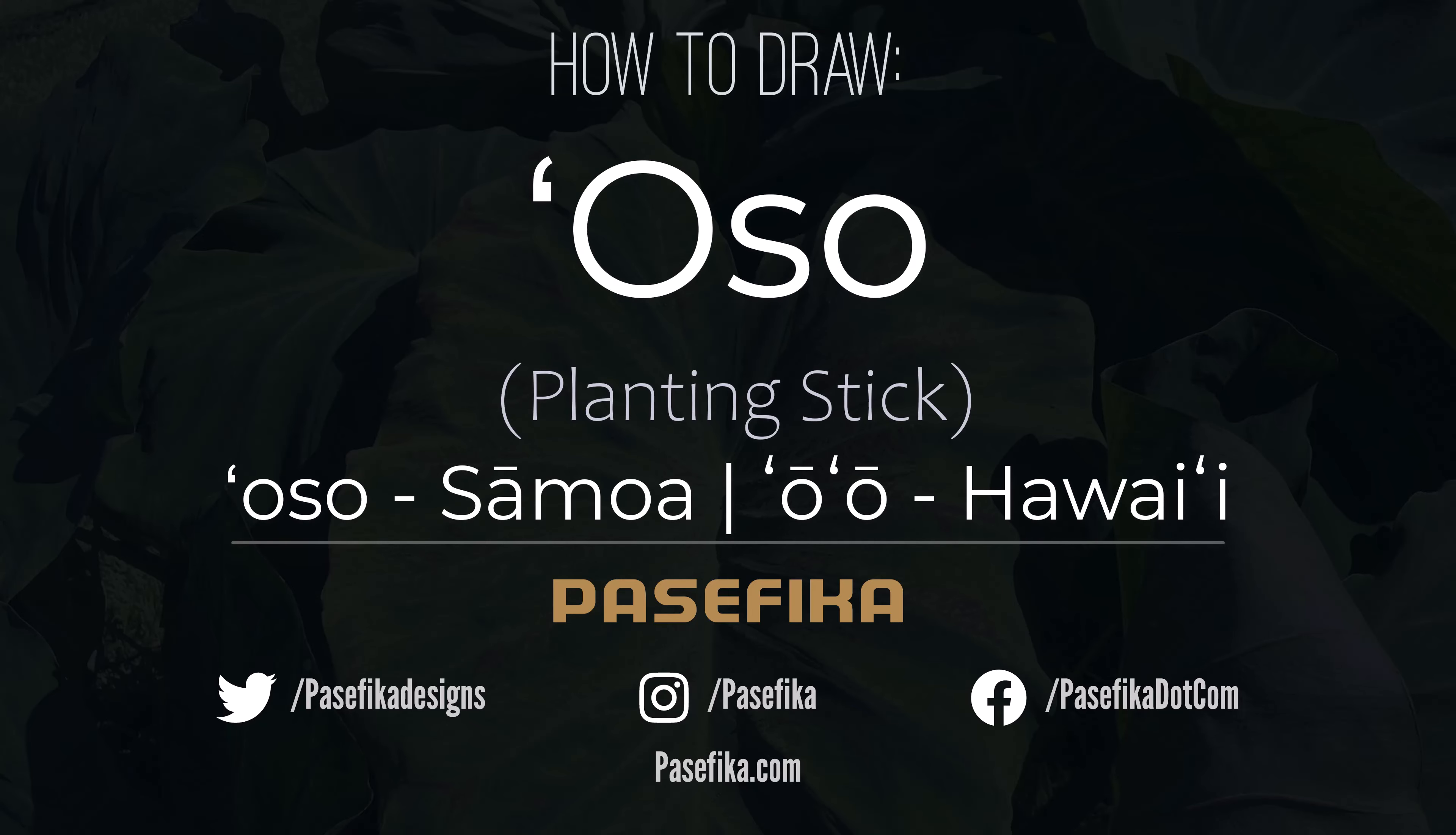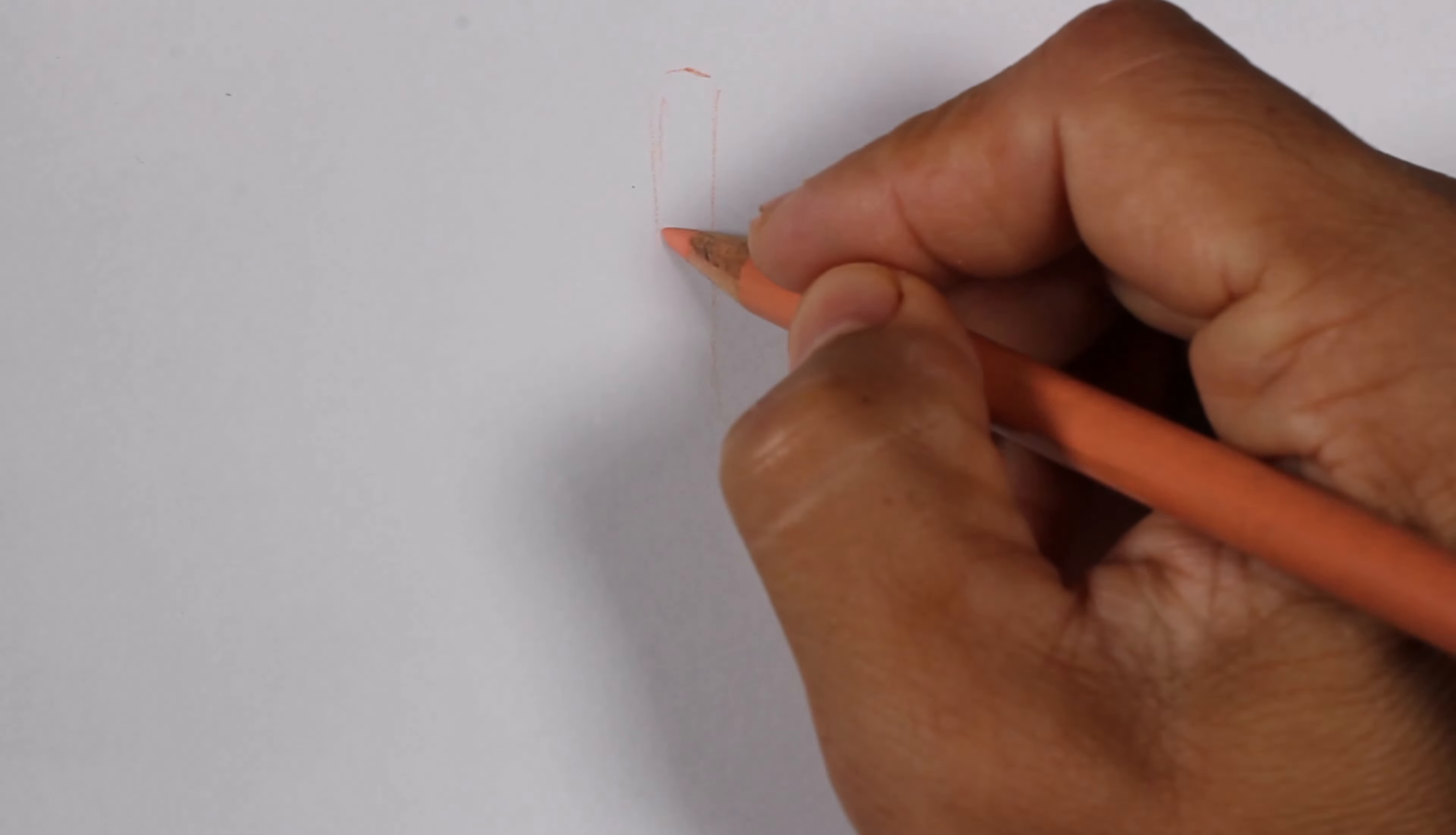In this video we're going to be drawing the osso freehand with colored pencils. This is a digging or planting stick used throughout Polynesia.